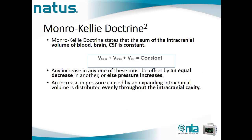Here is the very famous Monro-Kellie hypothesis. It provides the framework for managing and treating conditions that cause increased ICP, and it provides the basics of ICP. It states that the sum of the intracranial volume of blood, brain, and CSF is always constant. Any increase in any one of these must be offset by an equal decrease in another, or else the pressure will rise. An increase in pressure caused by expanding intracranial volume is distributed evenly throughout the intracranial cavity.